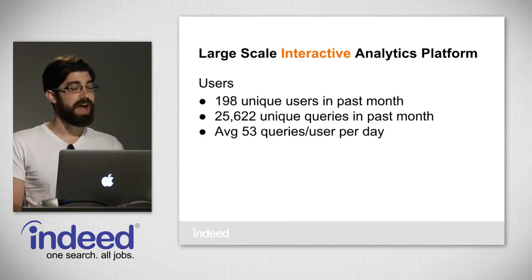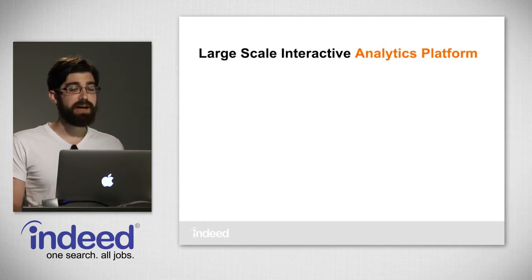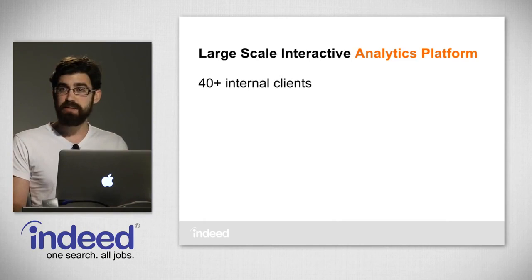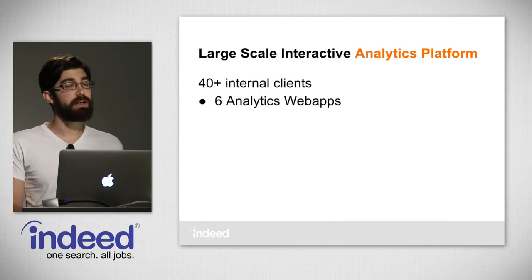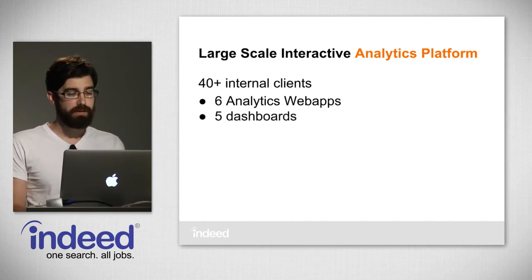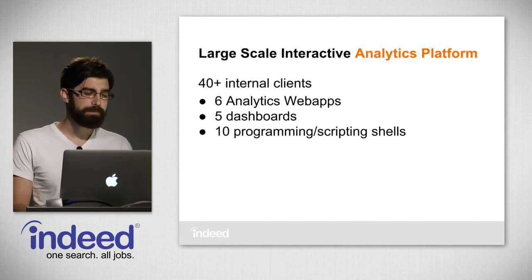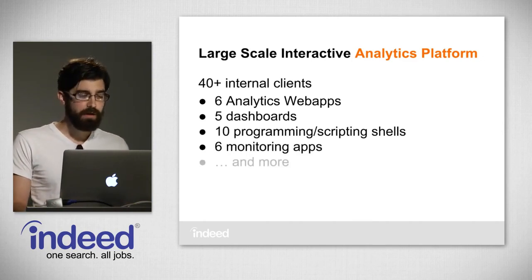Because we can ask questions so fast, we can iterate through it, do different variations, ask a bunch of questions. We call it a platform, not just a tool, because we can build a lot of tools off it. We have 40 internal clients using it: six analytics web apps like Imhotep Data Explorer or Ramsey's, five dashboards that pull data from it all day long, 10 programming shells like Ish — including an R one and a Python one — and six monitoring apps that check performance of our production software.